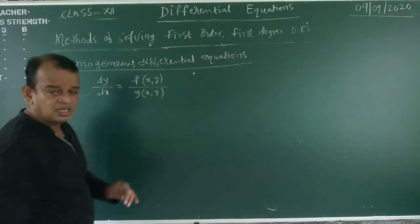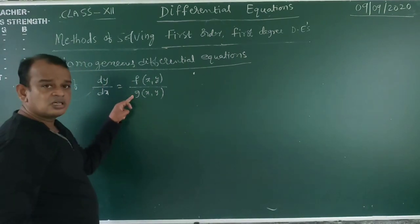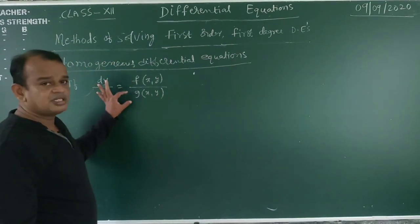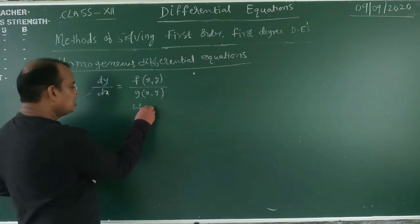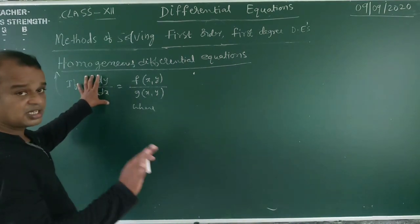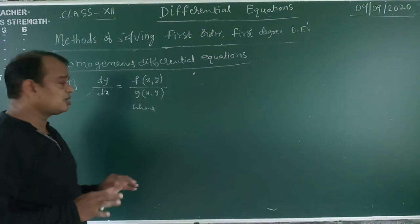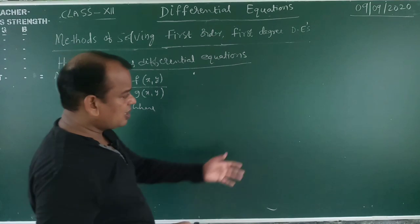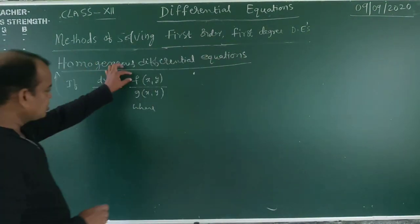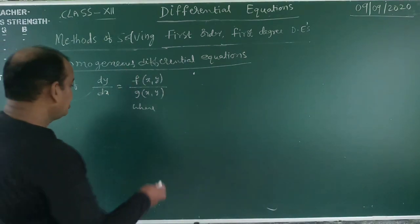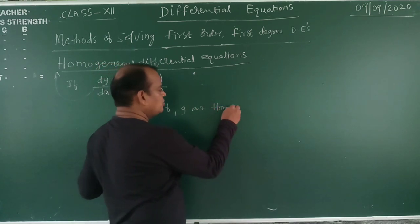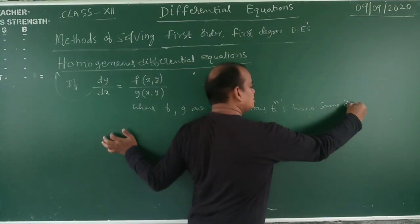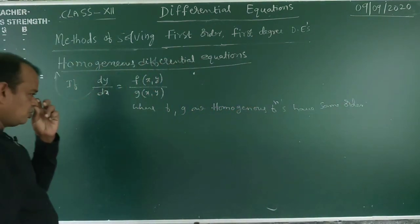Is it homogeneous or not? It is homogeneous when f and g are homogeneous functions of the same degree. Suppose the degree is 2 for both — it is 100% a homogeneous first order, first degree differential equation. Where f and g are homogeneous functions of the same order.